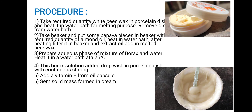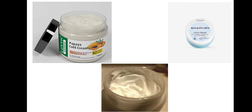Procedure of cold cream: First, take the required quantity of white beeswax in a porcelain dish and heat in a water bath for melting. Remove the dish from the water bath, then place papaya pieces in a beaker with the required quantity of almond oil and heat in water bath; after heating, filter and extract the oil into the melted beeswax. Then prepare the aqueous phase by mixing borax and water, and heat in water bath at 75 degrees Celsius. Add the borax solution dropwise to the porcelain dish with continuous stirring, then add vitamin E from an oil capsule. A semi-solid mass forms into cream.